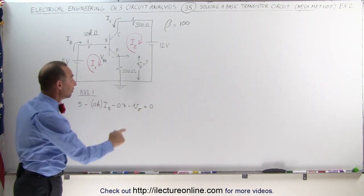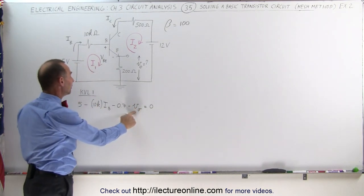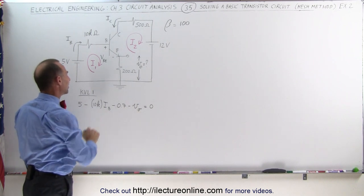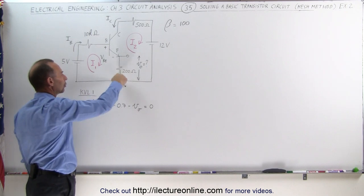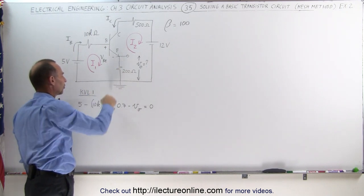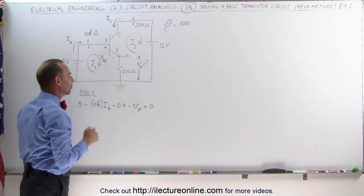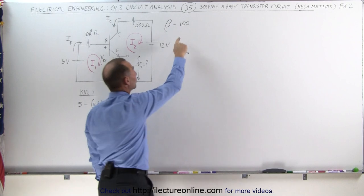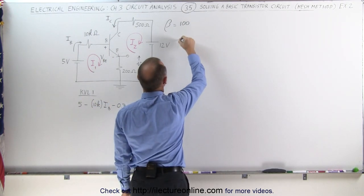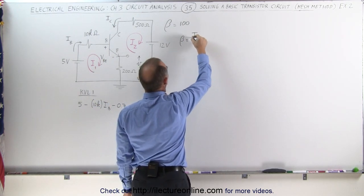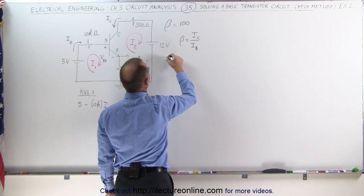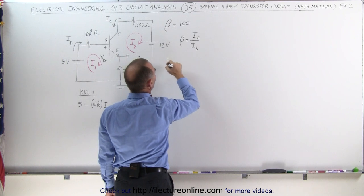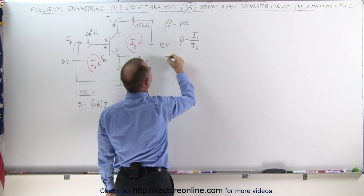So let's try to solve for V sub O, but that means we need to know what the base current is. There is a relationship between the current going through this resistor and the current coming to the base. With the current gain we can say that beta equals the ratio of the collector current divided by the base current, and the collector current I sub C is equal to 100 times the base current.